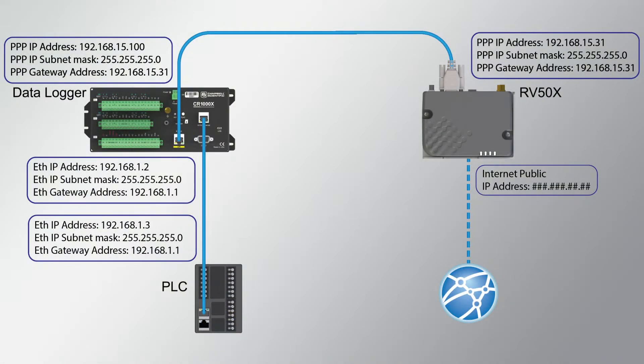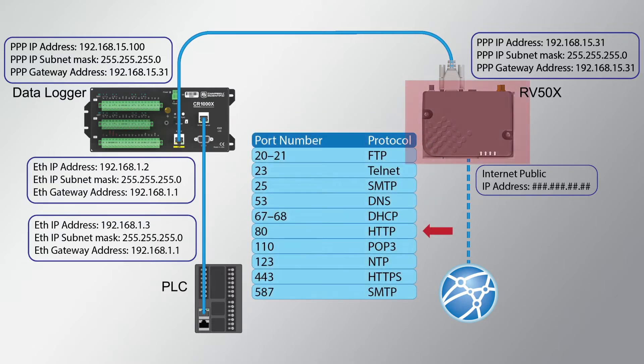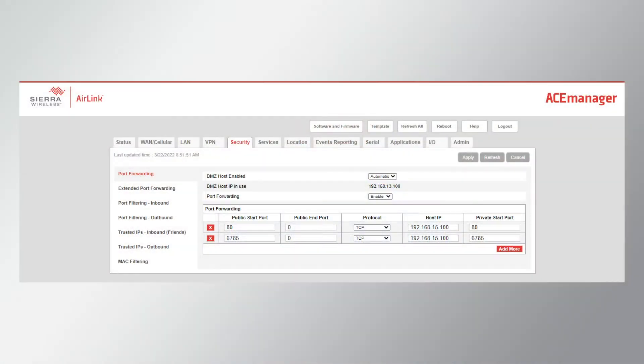Take a look at the network I set up in part one. Suppose I want to access the datalogger web page from the internet — I will have to go through the RV50X. As a public connection, specifying port 80 will access the RV50X port 80, not the datalogger port 80 where the web page is. This is where port forwarding comes into play. I can set up a rule for the RV50X with the online configuration tool Ace Manager.